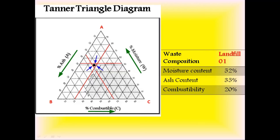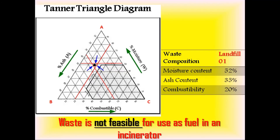Now you can find the point of intersection of moisture content, ash content, and combustibility percentage. This dot falls outside the shaded portion, which indicates that the waste present in landfill 1 with these waste compositions is not feasible for use as fuel in an incinerator.